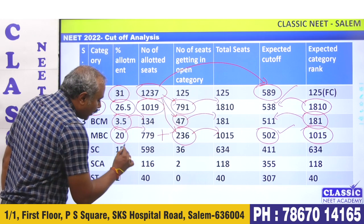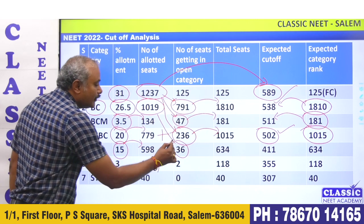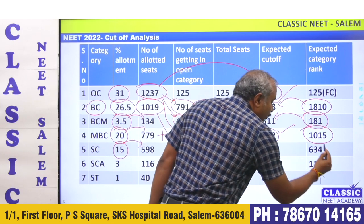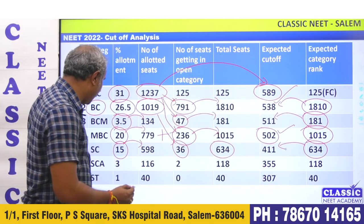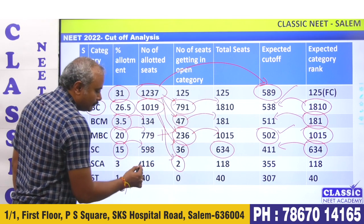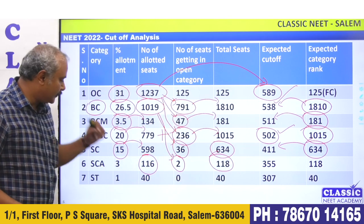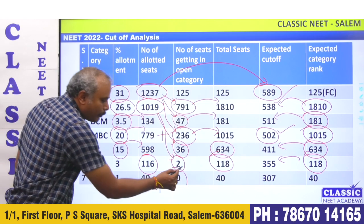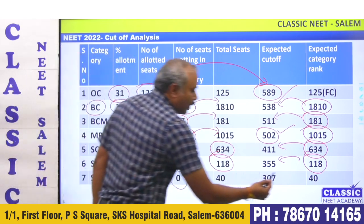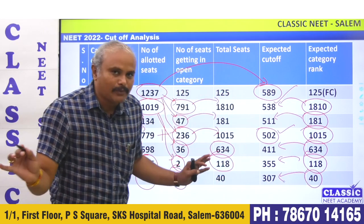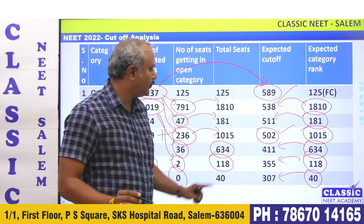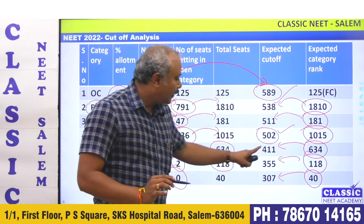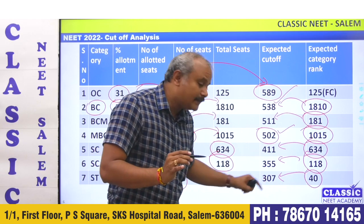SC is 598 seats; they go to open category and get 326 seats. SEA has 113 seats. Approximately: OC cutoff is 589, BC is 538, BCM is 511, MBC is 502, SE is 411, SEA is 355, ST is 307. This is the cutoff rank list.